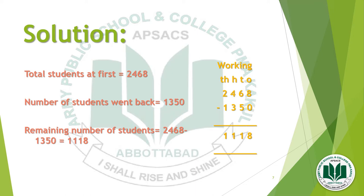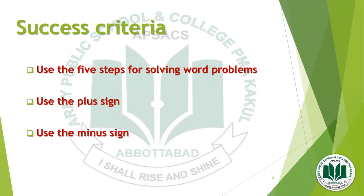For the last step — check your answer — add 1118 to the smaller number 1350 and you should get the bigger number 2468. The success criteria for this topic are: use the five steps for solving word problems, use the plus sign correctly, and use the minus sign correctly.